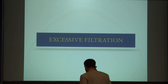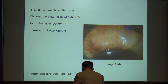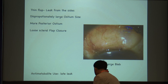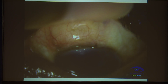Coming to excessive filtration: you have excessive filtration when the bleb is formed and there is no leak, but you have a large diffuse bleb. Especially when you create a thin flap, once it is healing, the flap will get contracted and can leak from the sides. A disproportionately large or more posterior ostium can also cause increased filtration. A loose scleral flap closure — if the patient squeezes, the suture will give away and cause overfiltration.